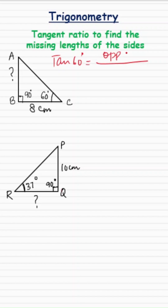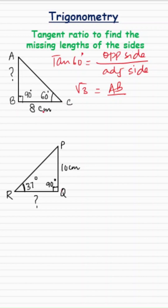the opposite side to the adjacent side. Now, what is tan 60°? Tan 60° is √3. So with respect to angle C, the opposite side is AB and the adjacent side is BC, which is given as 8. So AB comes out to be 8 times √3 centimeters.